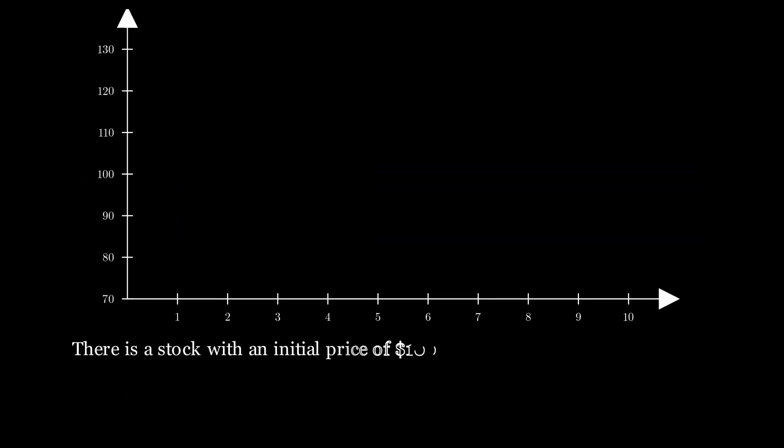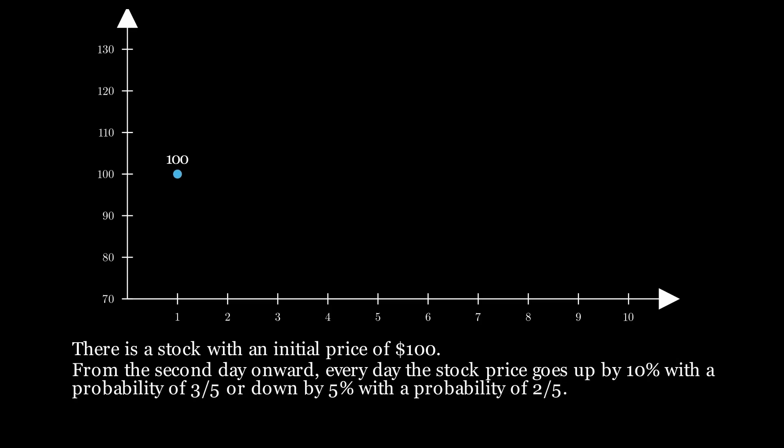There is a stock with an initial price of $100. From the second day onward, every day the stock goes up by 10% with a probability of 3/5 or down by 5% with a probability of 2/5. So at the end of day 2, the stock price increases to $110 with a probability of 3/5 or decreases to $95 with a probability of 2/5. This process continues for 10 days.